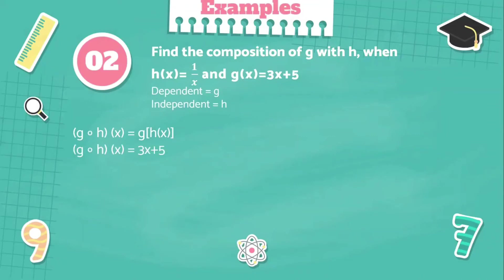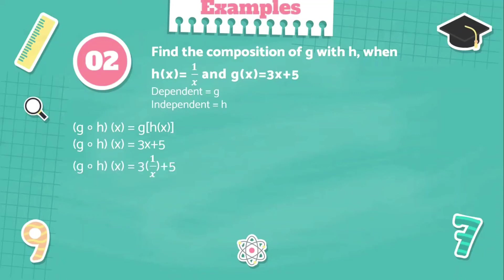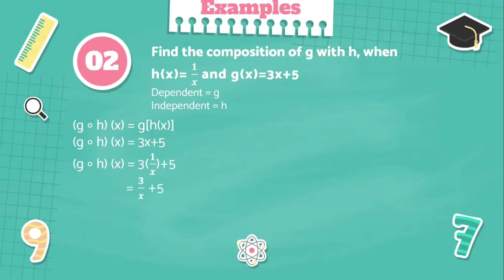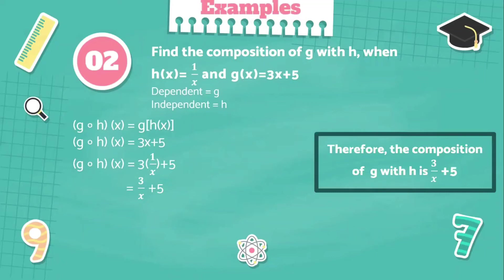Now we're going to substitute the x of the dependent function by the independent function. So, 3 times 1 over x plus 5. Multiplying numerator by numerator and denominator by denominator, 3 times 1 is equal to 3 over x, plus 5. Since we cannot simplify it further, the composition of g with h is 3 over x plus 5.